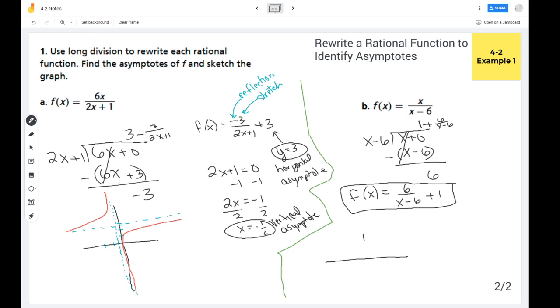And so in terms of graphing, let me change colors. My horizontal asymptote is going to be at y equals 1. And my vertical asymptote is going to be at x equals 6.